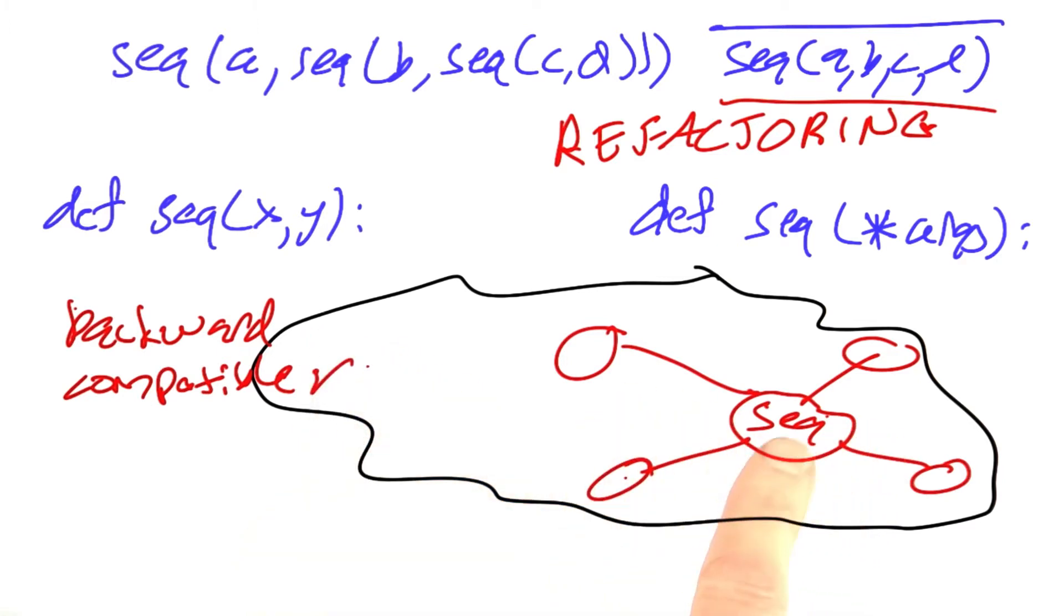For example, in this case, if I change sequence so that it still accepted two arguments like it did before, but it also accepts more than two, then that would be a backwards compatible change as long as I didn't break anything else.